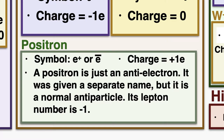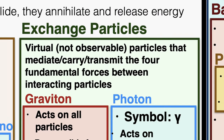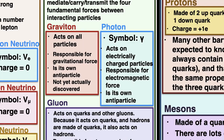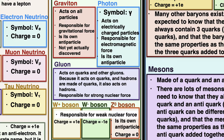Exchange particles are virtual particles that mediate or transmit the four fundamental forces between interacting particles. We have the graviton, photon, gluon, and the W+, W−, and Z0 bosons. The graviton carries gravity, the photon carries the electromagnetic force, the gluon carries the strong nuclear force, and the W+, W−, and Z0 bosons carry the weak nuclear force. The graviton, photon, and Z0 boson are all their own antiparticle.